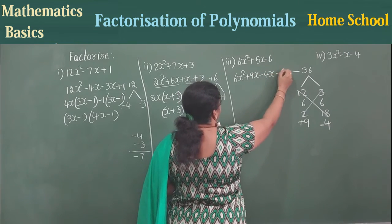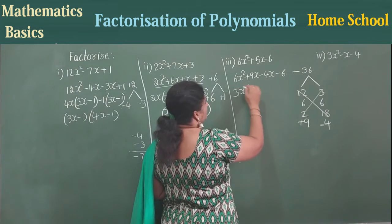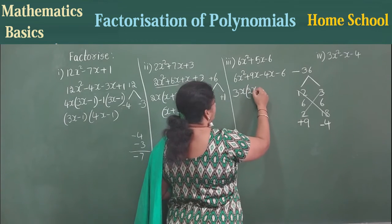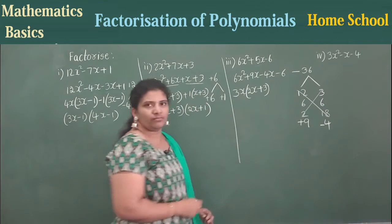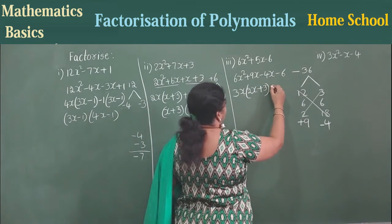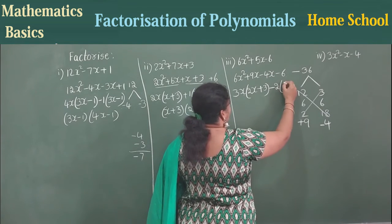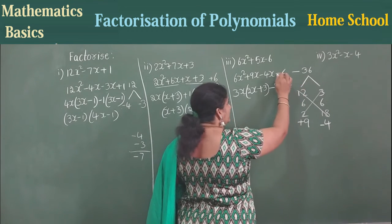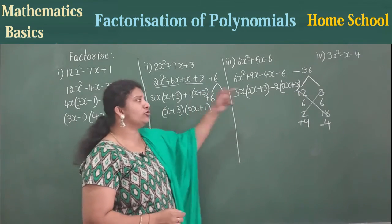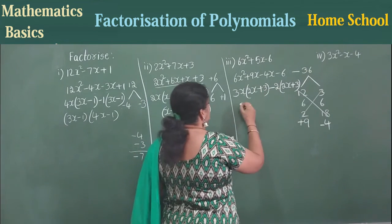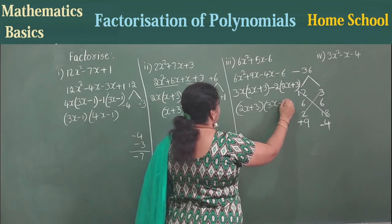So write: 6x² + 9x - 4x - 6. In the first two terms, 3x is common. In the last two terms, 2 is common — but we have a minus, so taking out minus common changes the sign inside to plus. So we get minus 2(2x + 3). Now in both groups, 2x + 3 is common. If we take out 2x + 3 as common, what is left? 3x minus 2. So the factors are (2x + 3)(3x - 2).